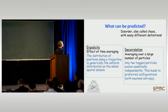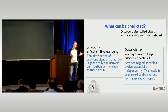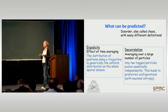The only thing you can actually predict is the fact that the system will be very disordered. This is what is usually called chaos, even though it can cover many different definitions. Maybe in dynamical systems, the most common definition of chaos is something related to ergodicity.